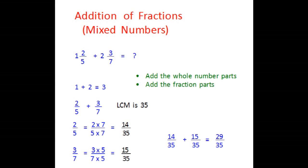Now we look at the whole number part, which is 3, and the fraction part, which is 29 over 35. So our answer is 3 and 29 over 35.